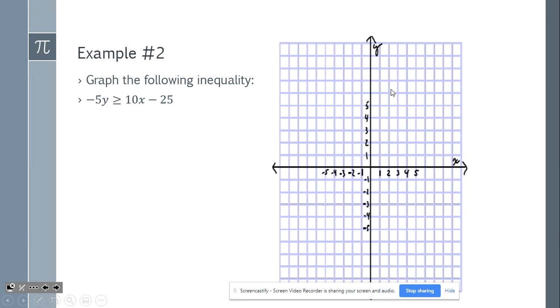Here's a second example for you to try. Pause the video at this point to give yourself a chance to try it on your own. The first thing we want to do is divide both sides by negative 5 in order to get it into slope-intercept form. Remember that this negative 5 now applies to both the 10 and the negative 25.